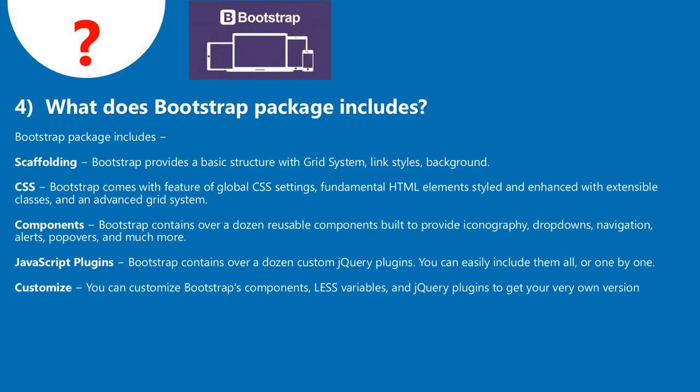Question 4: What does the Bootstrap package include? Bootstrap package includes: Scaffolding — a basic structure with grid system and link styles. CSS — global CSS settings, fundamental HTML elements styled with extensible classes and an advanced grid system. Components — over a dozen reusable components including iconography, dropdowns, navigation, alerts, popovers, and more. JavaScript plugins — over a dozen custom jQuery plugins, includable all at once or individually. Customize — Bootstrap's components, Less variables, and jQuery plugins can be customized.